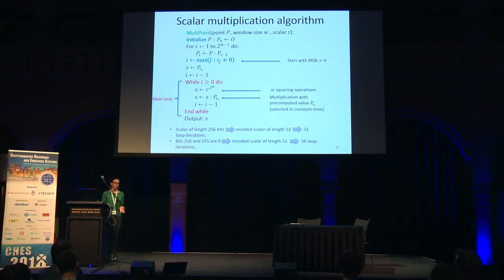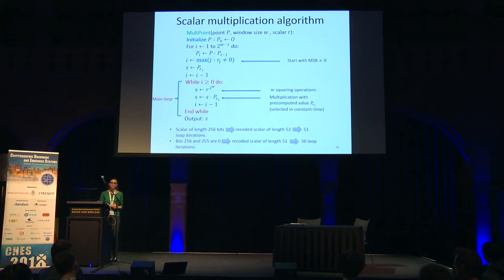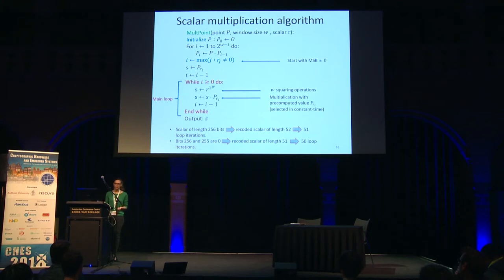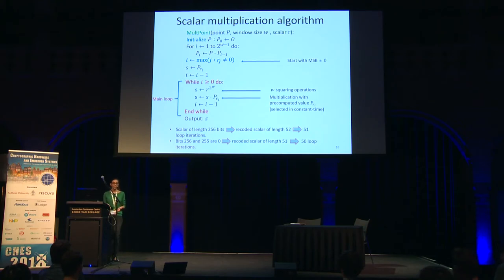For a scalar of length 256 bits, the recoded representation has 52 digits, so the main loop iterates 51 times. If bits 256 and 255 are zero, the recoded representation is length 51, and the loop iterates only 50 times. Every time we have a chunk of 5 bits equal to zero, the recoded nonce has one fewer digit, and the loop iterates one fewer time. Counting loop iterations gives information about the length of the recoded nonce — and thus the number of leading zero bits in r.